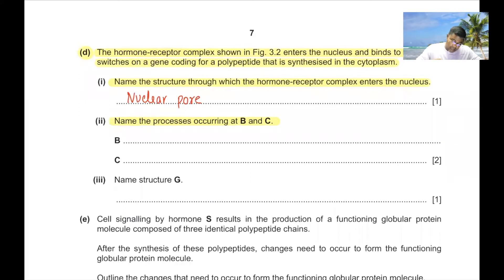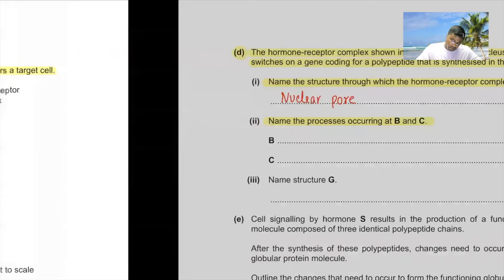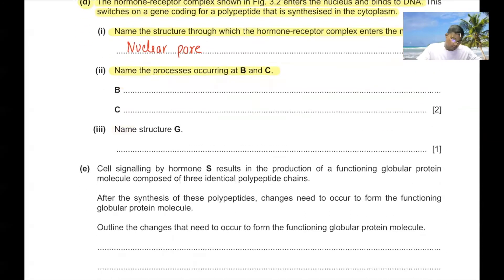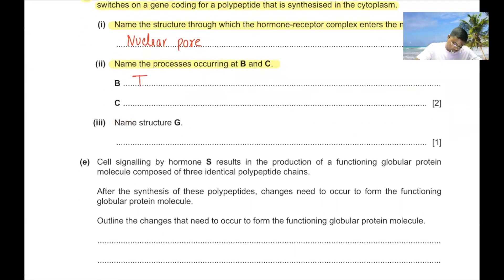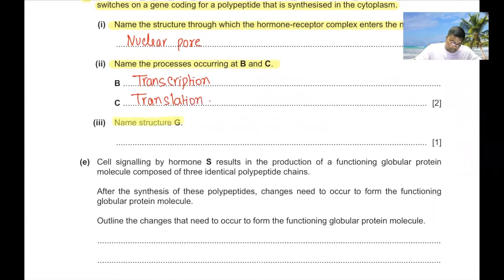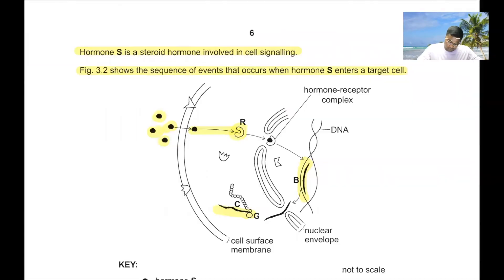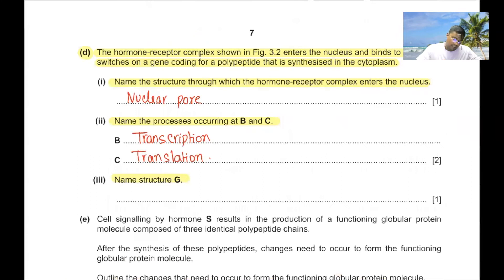Name the process occurring at B and C. Process B is transcription and C is translation. The structure G is a ribosome — specifically a eukaryotic ribosome, or 80S ribosome.